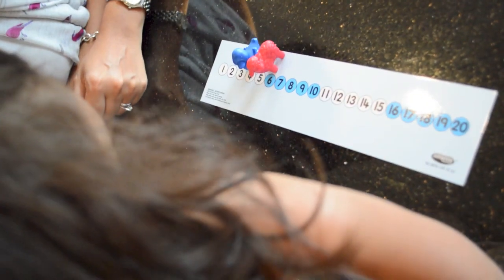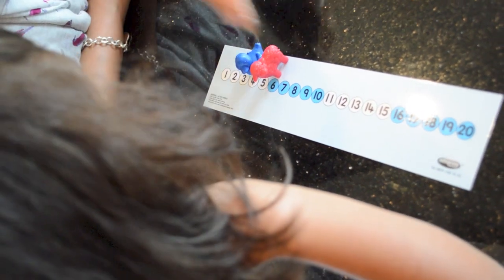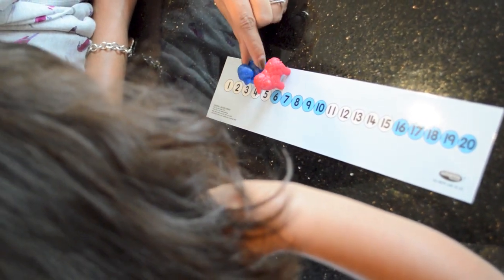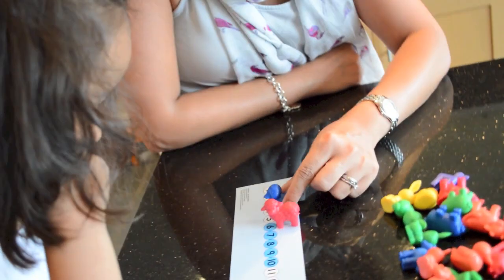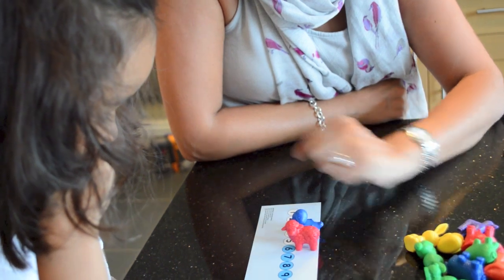And what's the duck on? Four. So how many more is the sheep than the duck? Two more. Good girl, two more. That's good maths language, isn't it?